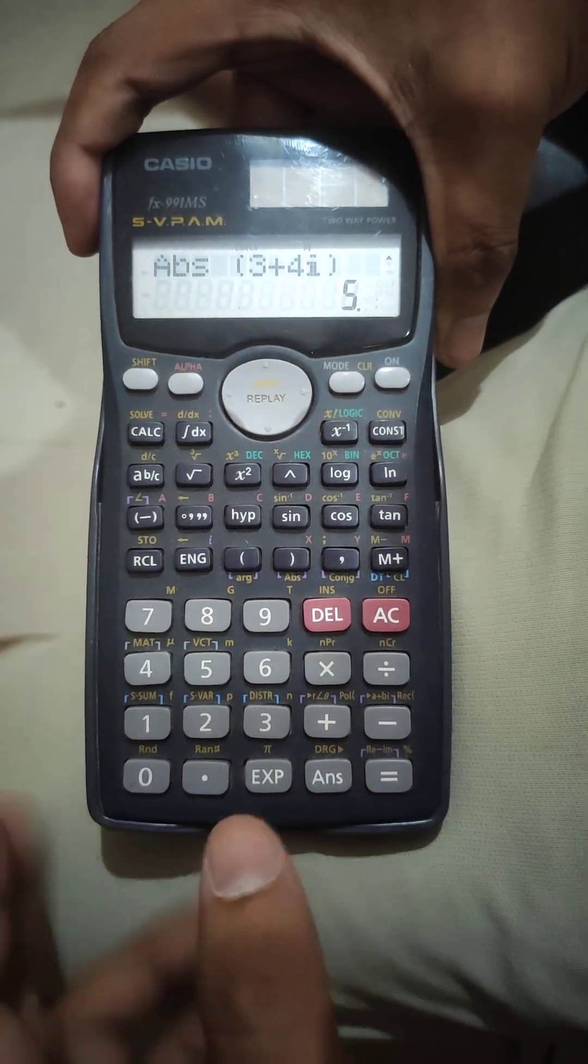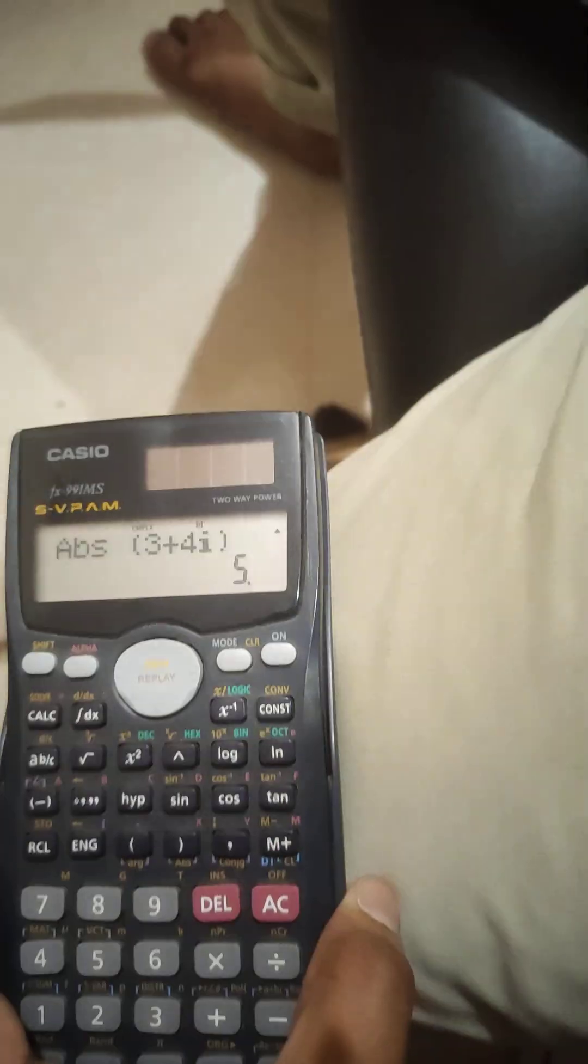And then press equal. So this is 5 as we found in our calculation, 5. So this is how you find the modulus of any complex number.